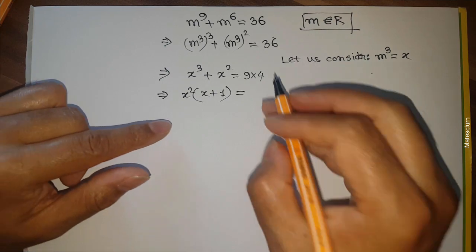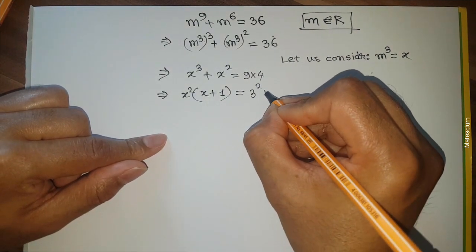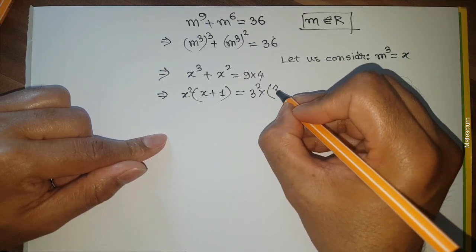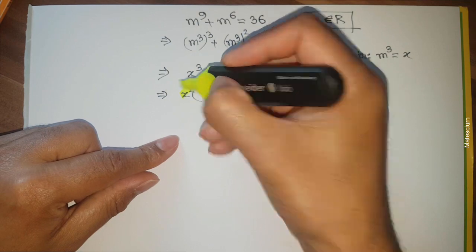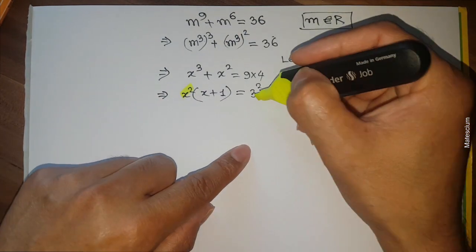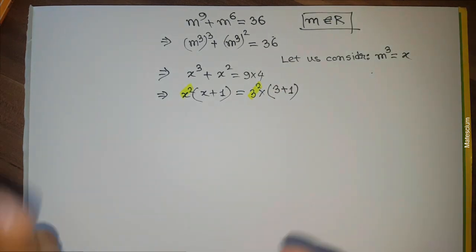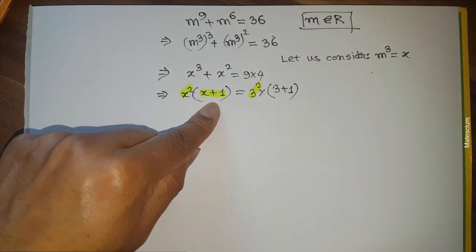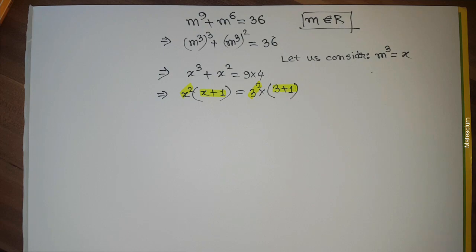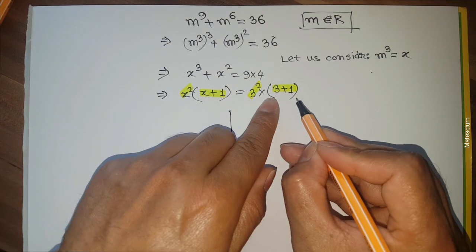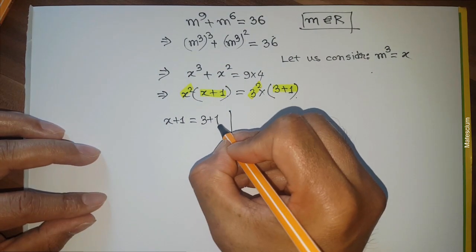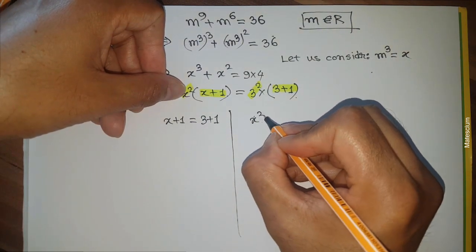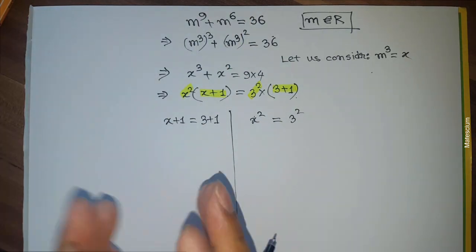Now I'll do a small mathematical engineering on the right-hand side. I rewrite 36 as 9 multiplied by 4, then 9 as 3², and 4 as (3 + 1). So we have x²(x + 1) = 3²(3 + 1). Since something-squared on the left equals something-squared on the right, and something-plus-1 on the left equals something-plus-1 on the right, there are two possible solutions.